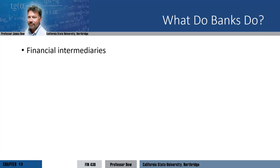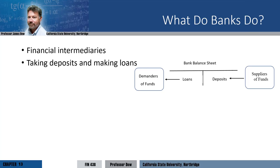Banks do a number of things. We saw in the first part of the course that banks are one type of financial intermediary. They connect the suppliers of funds with the demanders of funds. They do this by taking in money from the suppliers of funds as deposits. These deposits are liabilities for the bank, as they represent money the bank owes the depositors. The bank can then lend the money to the demanders of funds — the borrowers — and those loans are assets for the bank.